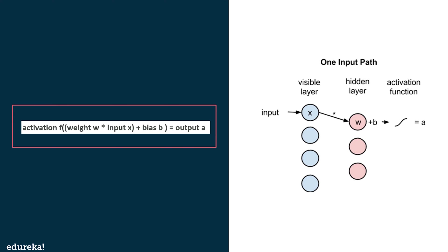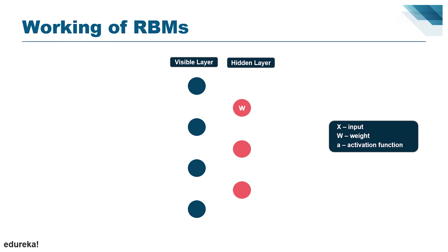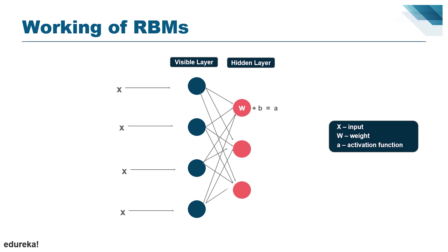Each visible node takes a low-level feature from an item in the dataset. For example, from a dataset of grayscale images, each visible node would receive one pixel value per pixel in one image. Following that single pixel value X through the two-layered net: at node one of the hidden layer, X is multiplied by a weight and added to a bias. The result is fed into an activation function, producing the node's output. When several inputs combine at one hidden node, each X is multiplied by a separate weight, the products are summed, a bias is added, and the result is passed through an activation function to produce one output per hidden node.